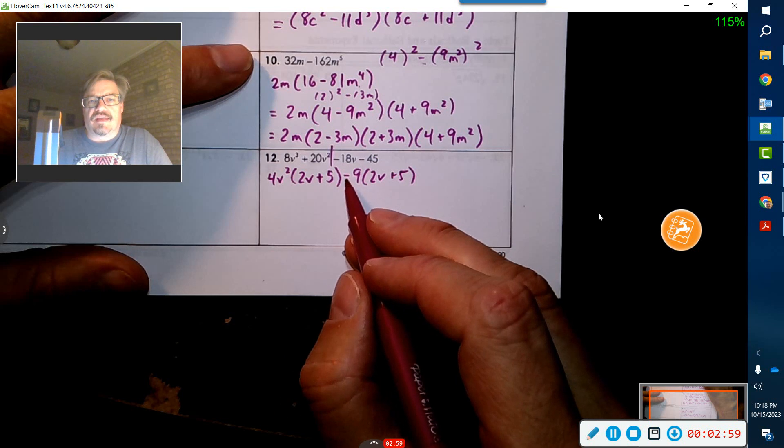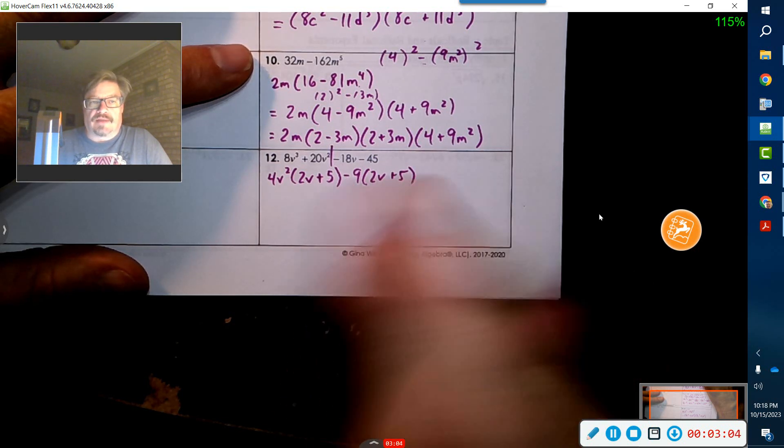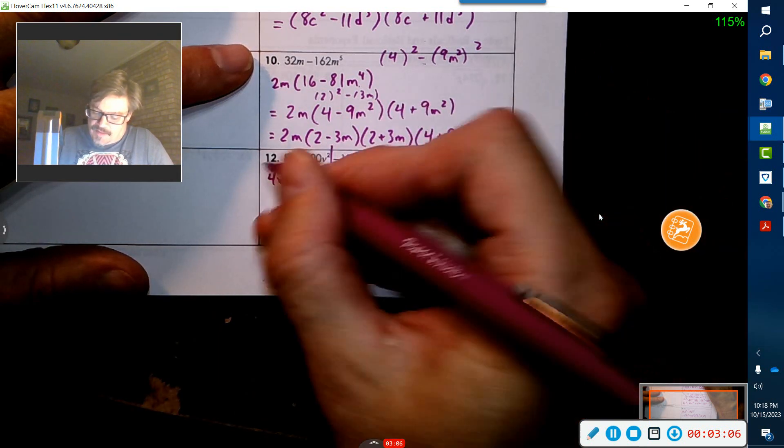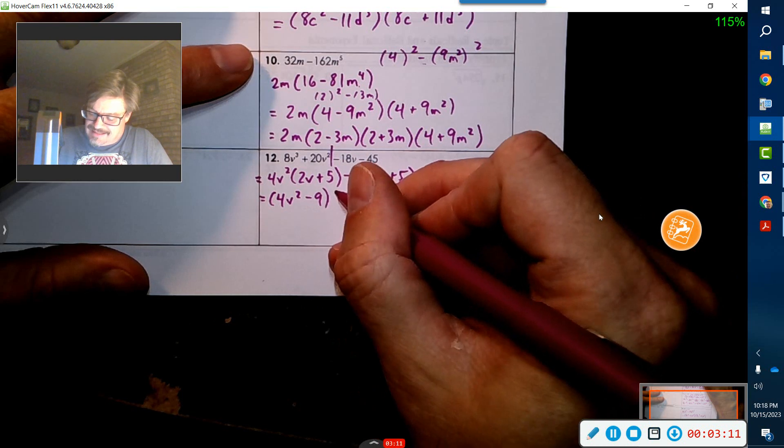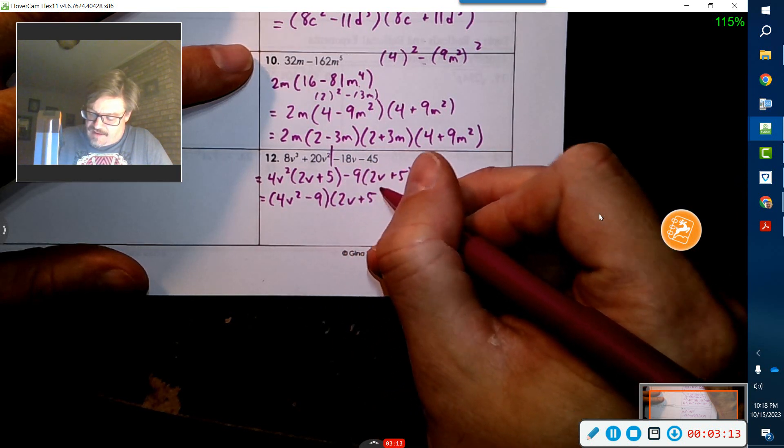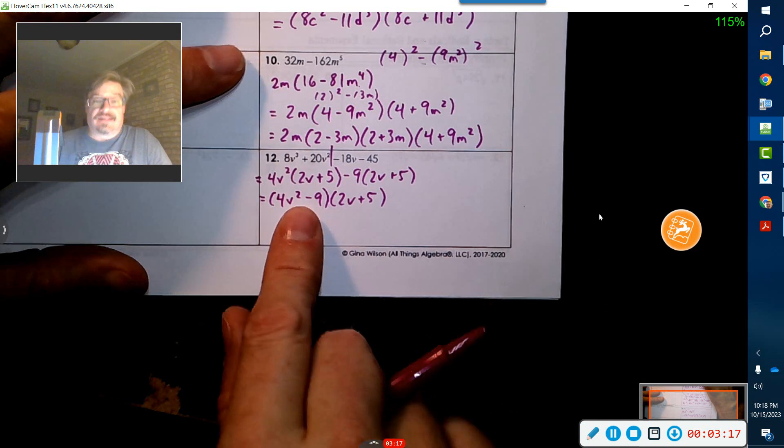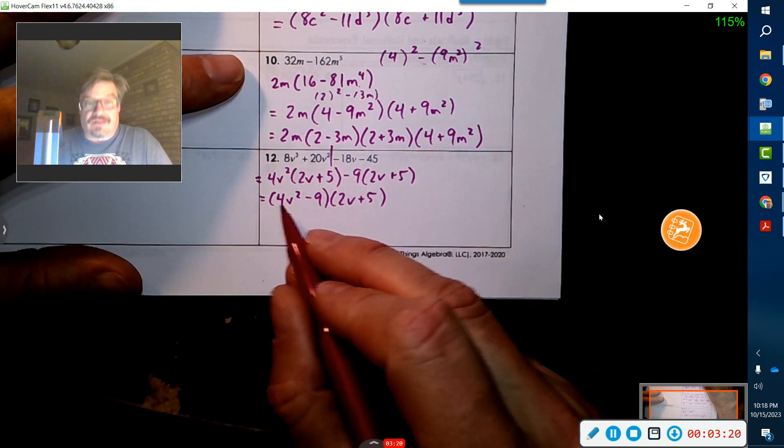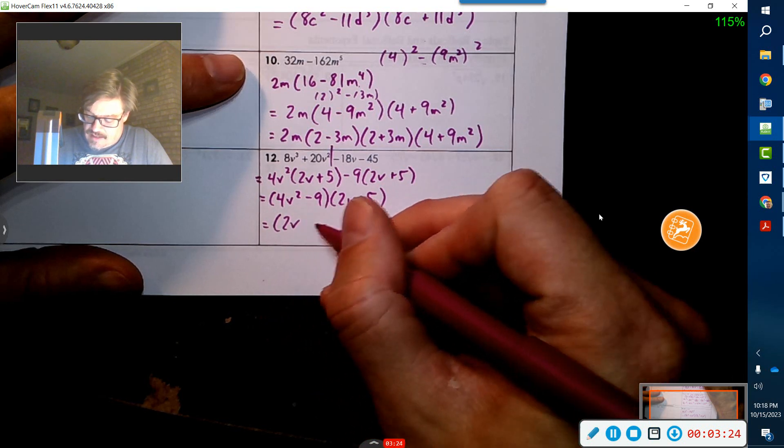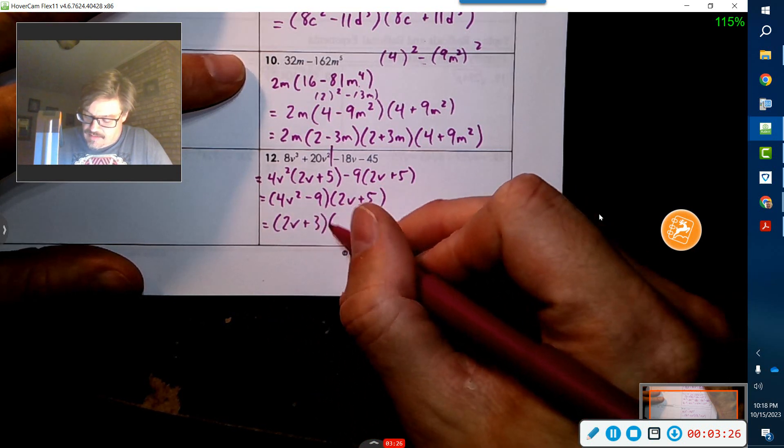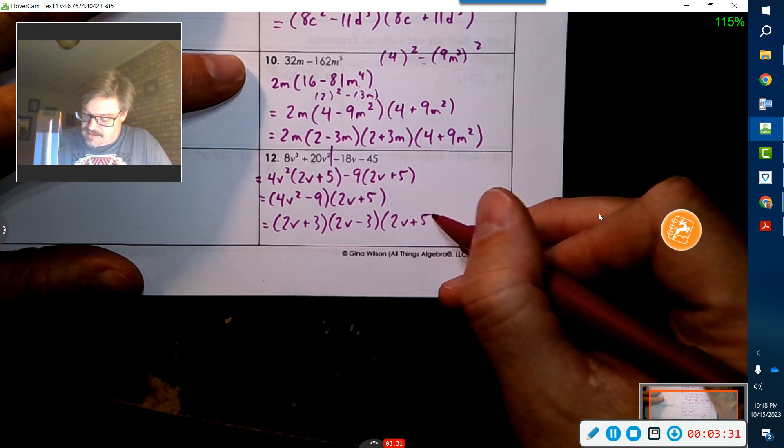If you put a plus there, then this would be a negative two V minus five, and then those wouldn't match. You've got to make sure that they match. Okay. So as we are right now, we have a four V squared minus nine times two V plus five. And that's cool. And normally you'd be done, except this guy's a difference of two squares. So watch out for that. I've got a two V and then a three. So this is going to be two V plus three, and then two V minus three times two V plus five.